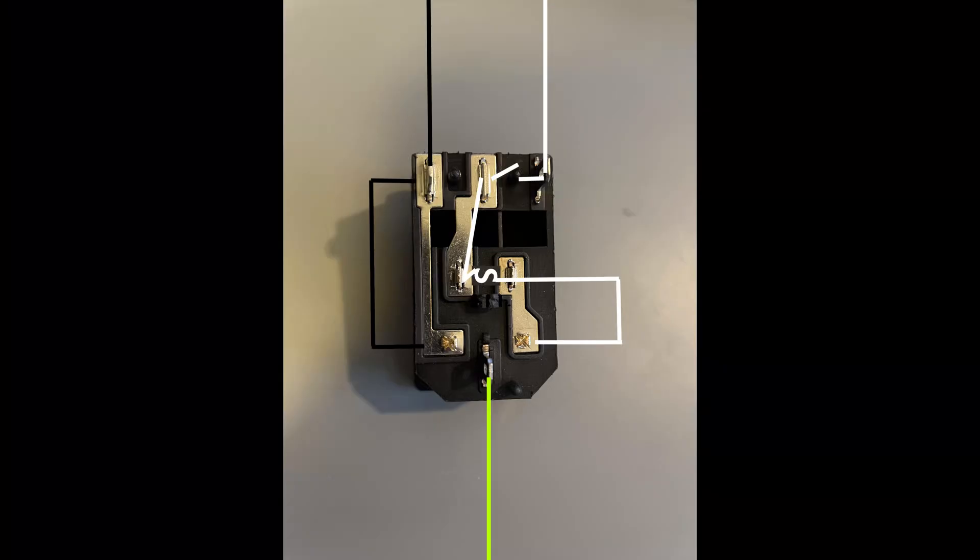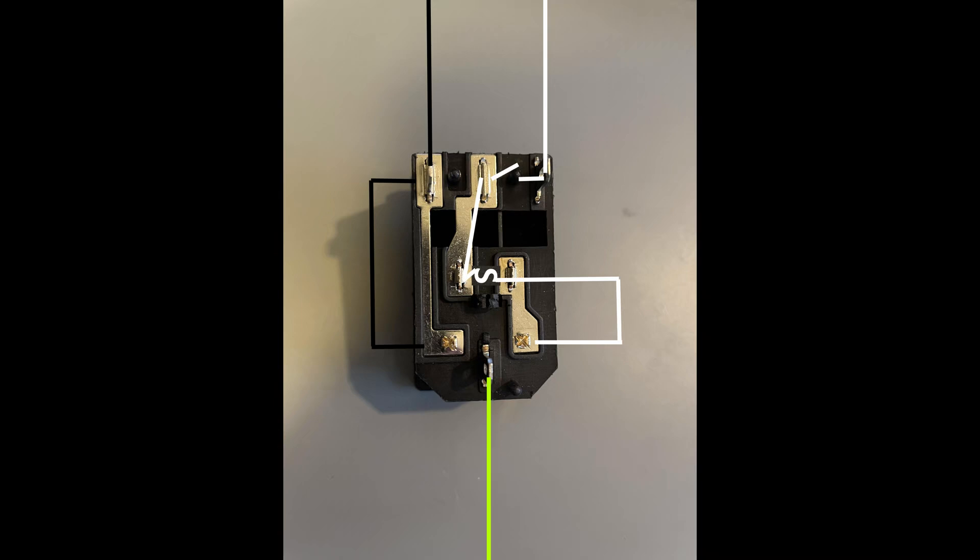Here's the plug and switch and fuse assembly with the back taken off. You can clearly see the hot wire just passes on through. The only thing that's going through the chain, through the fuse and through the switch, is the neutral wire.